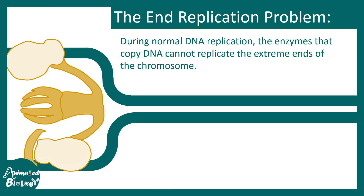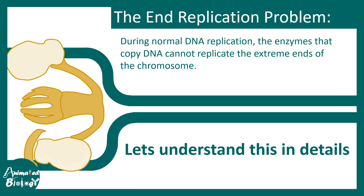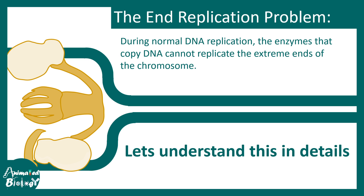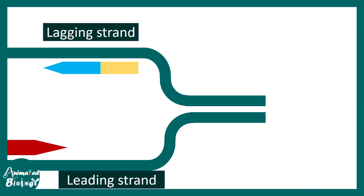This is the end of the chromosome, and during a normal round of DNA replication the enzyme that copies the DNA could not copy the extreme end of the chromosome. Let us try to delve into details and understand this process. Here you can see the leading and the lagging strand synthesis eventually reaching the end of the DNA, the end of the chromosome.